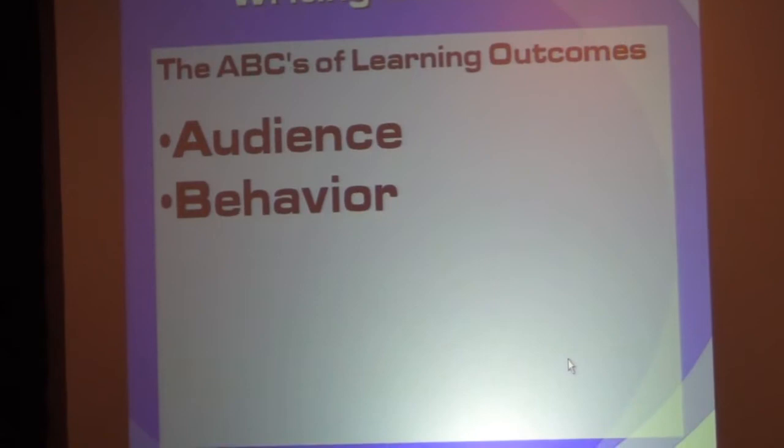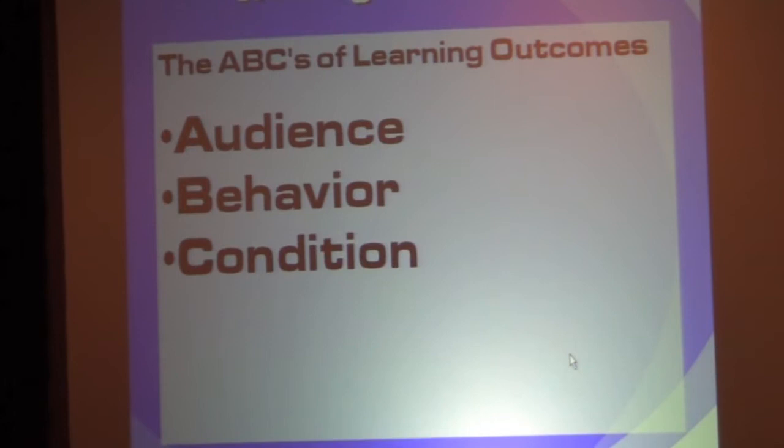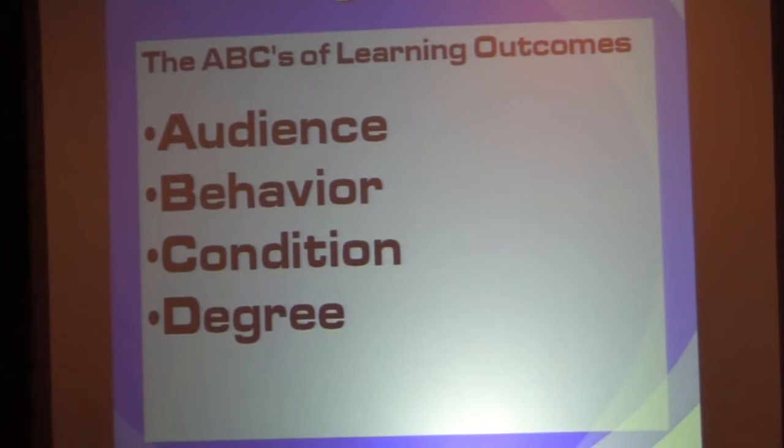C is the condition — this is the program, the event, the concert, the comedian, the program that happens. And then D is degree — this is how much they learn while they're there. Audience, behavior, condition, degree. Simple. A, B, C, D.